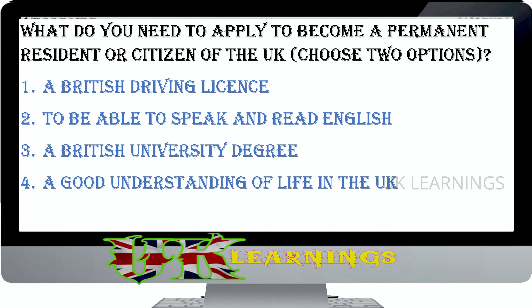What do you need to apply to become a permanent resident or citizen of the UK? Choose two options: a British driving license, to be able to speak and read English, a British university degree, a good understanding of life in the UK. The correct answers are to be able to speak and read English and a good understanding of life in the UK.